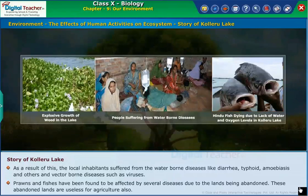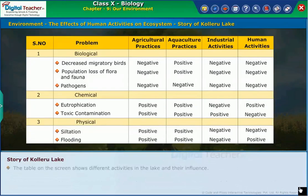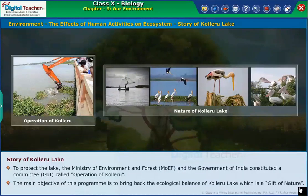Prawns and fishes have been found to be affected by several diseases due to lands being abandoned. These abandoned lands are also useless for agriculture. The table on the screen shows different activities in the lake and their influence. To protect the lake, the Ministry of Environment and Forests and the Government of India constituted a committee called Operation Koleru, with the main objective of bringing back the ecological balance of Koleru Lake, which is a gift of nature.